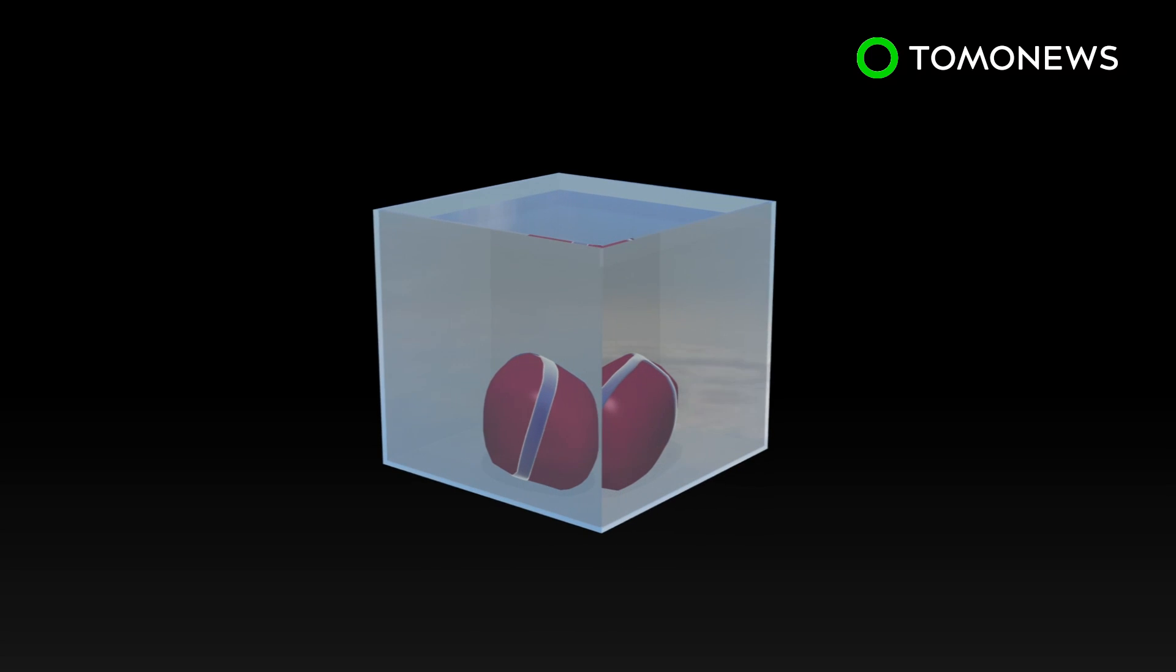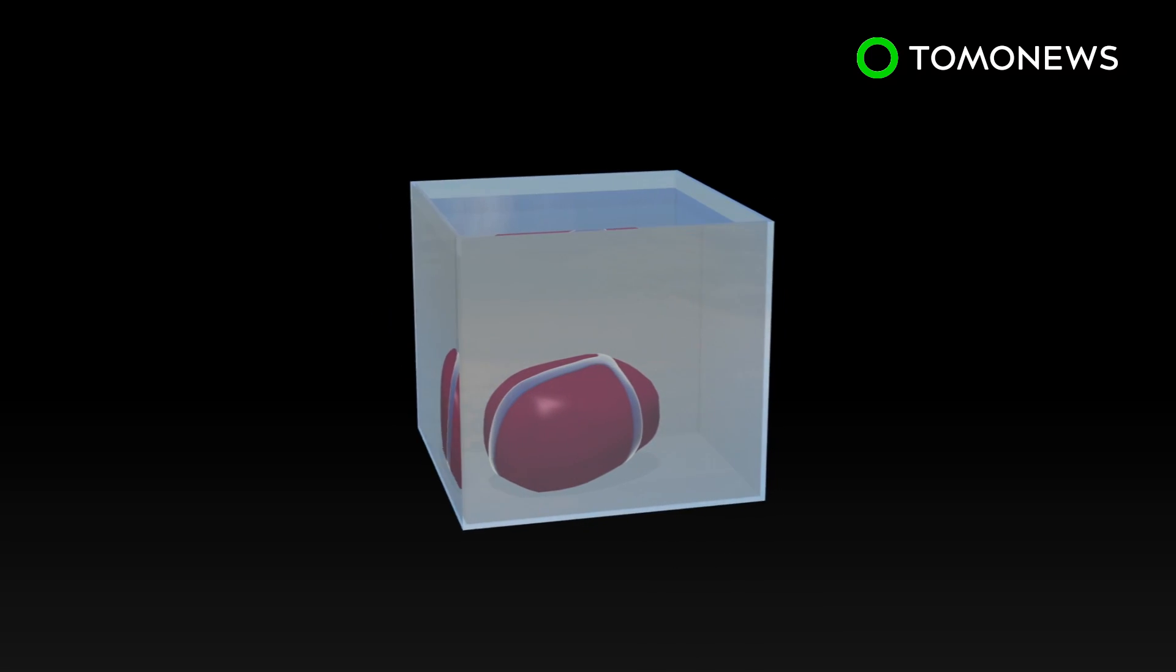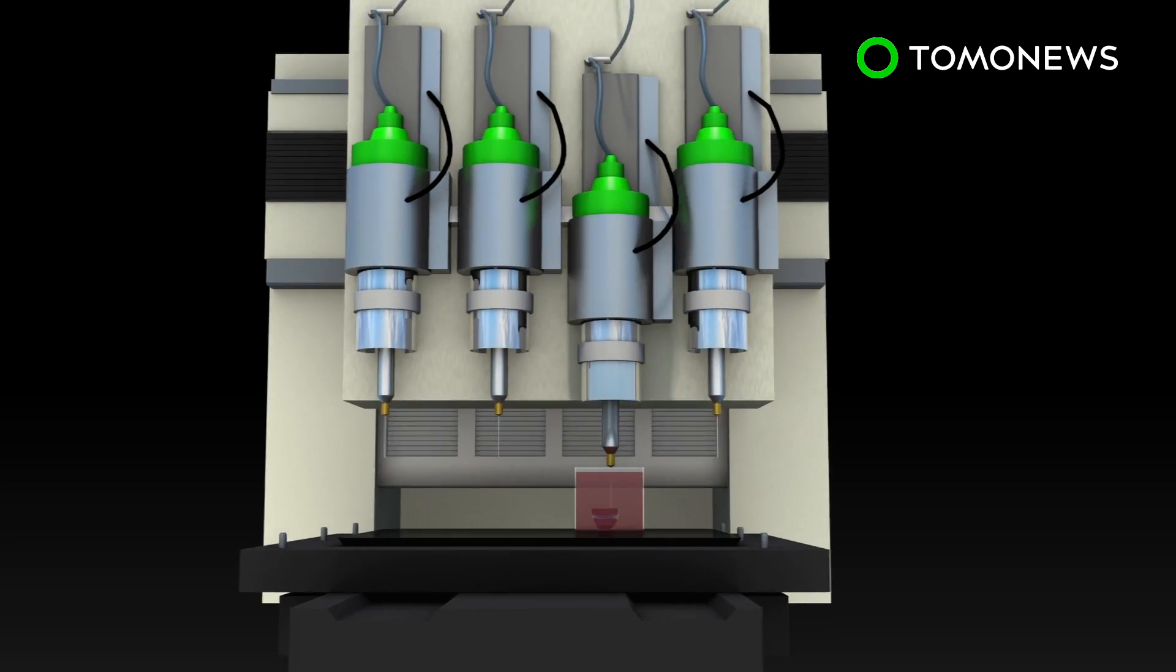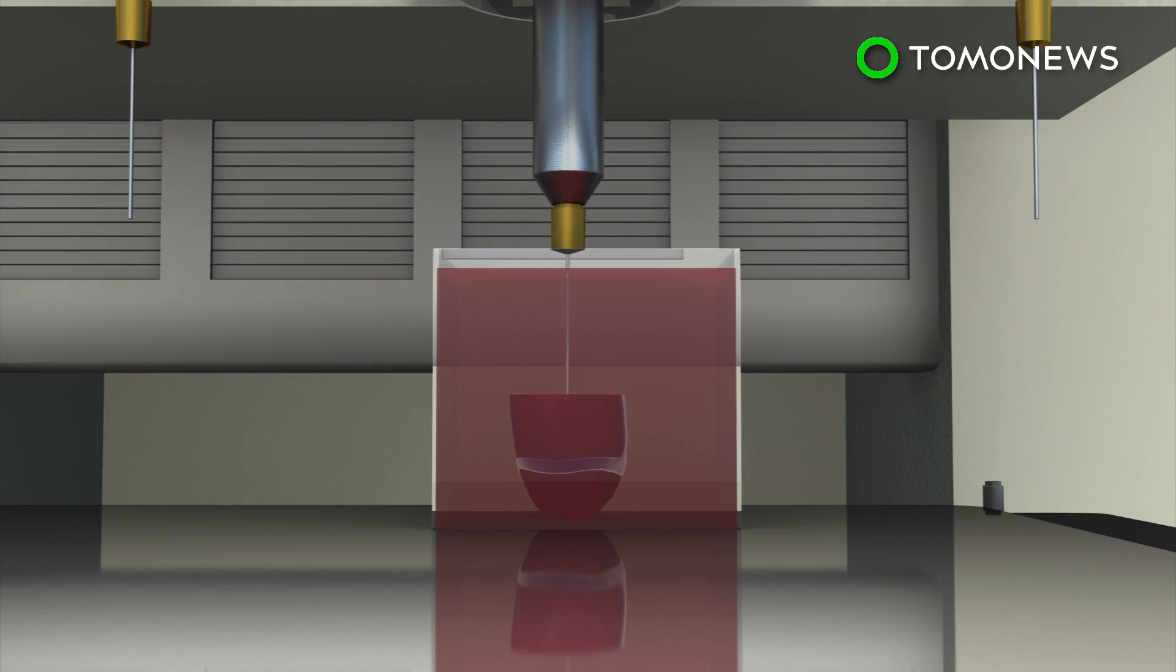According to CNN, the cells and the hydrogel were used to create heart patches complete with blood vessels and heart chambers. The researchers then used a 3D bioprinter to build the 3D heart, layer by layer.